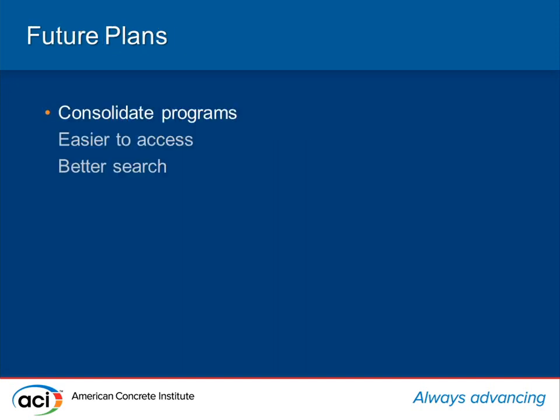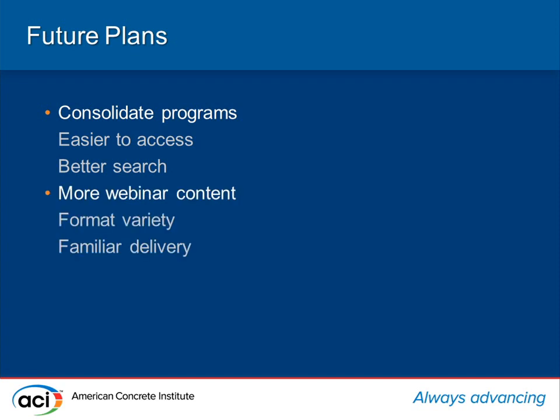Some of the future plans: we're planning to consolidate our online CEU program and our e-learning program. Because of the way they were developed, they're handled in different systems, which makes it confusing for the user on the ACI site to tell which one they want. So we're going to combine those all into an e-learning type system, getting a new learning management system to provide easier access to courses and better search utility so our e-learning courses come up more often in general searches. We're also looking at doing more webinar content — we can use recordings of portions of webinars as clips in an e-learning course, which gives variety so it's not all reading or all listening.